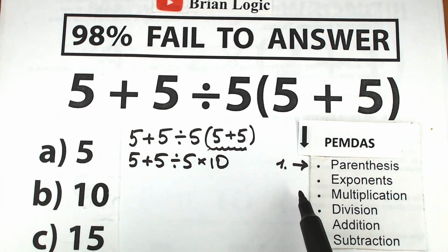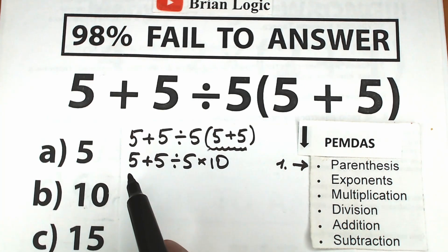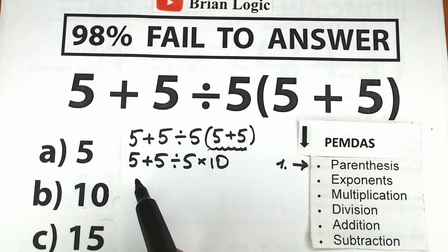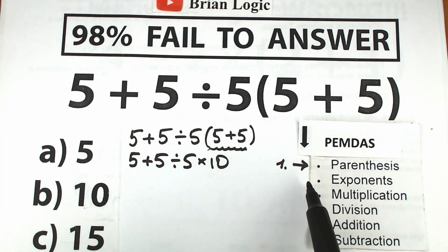The next step is exponents. Let's scan where we have any exponents in our challenge. Personally, I don't see any — we don't have any powers, squares, or cubes here. So we just skip this part; we don't have any exponents.